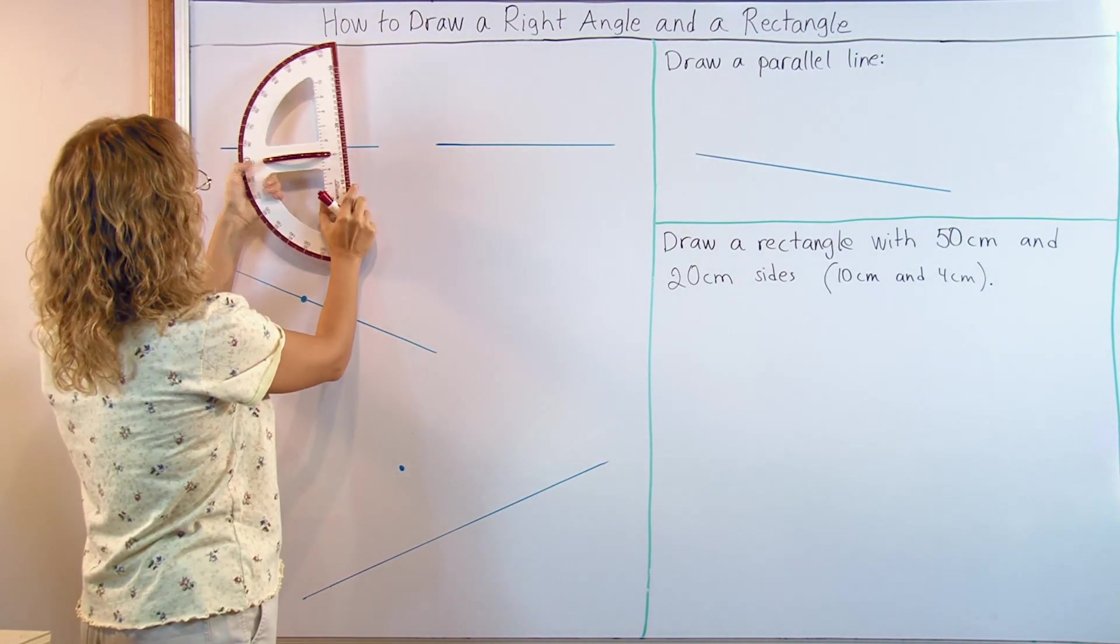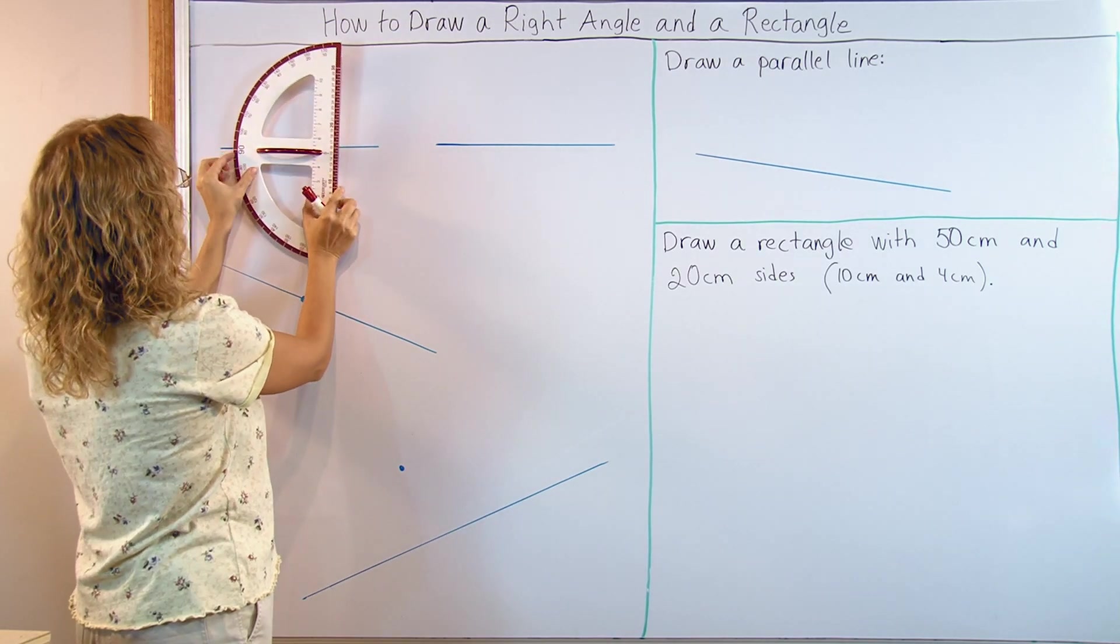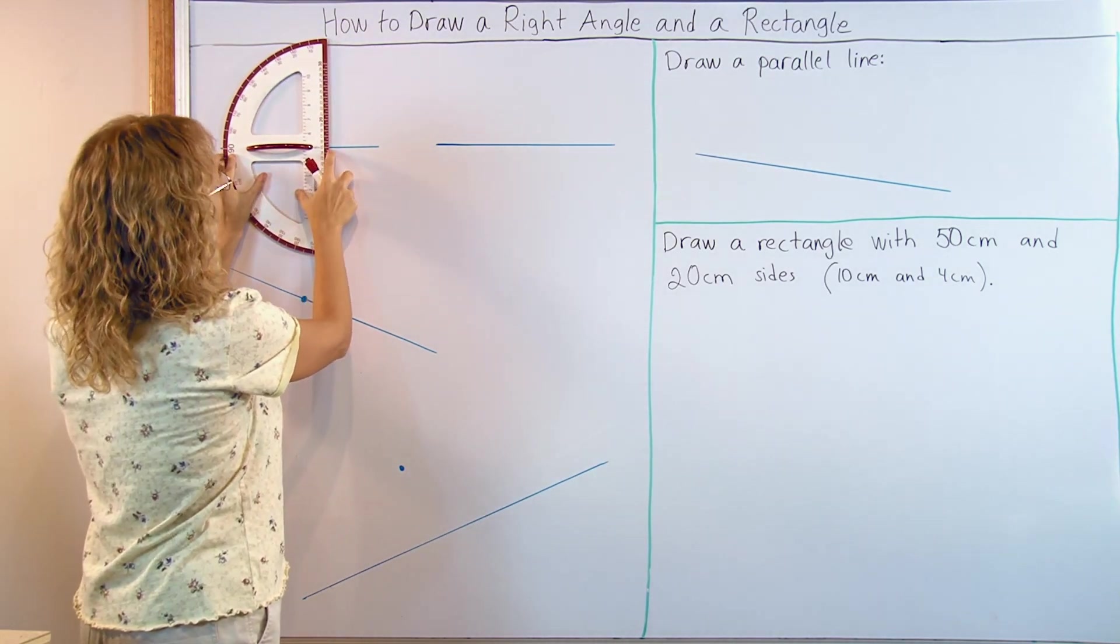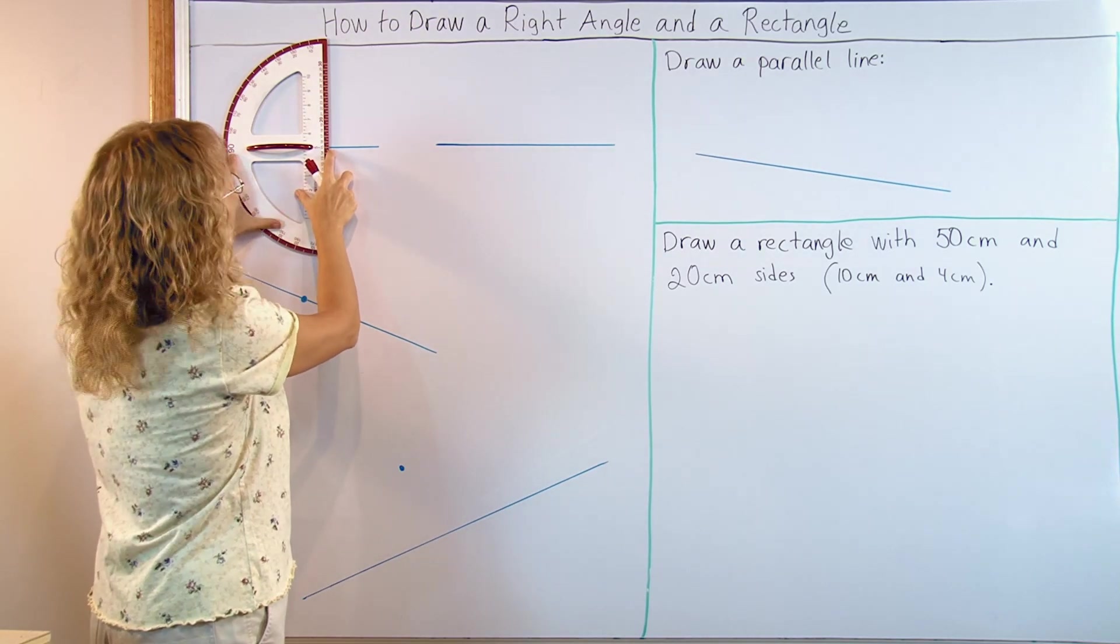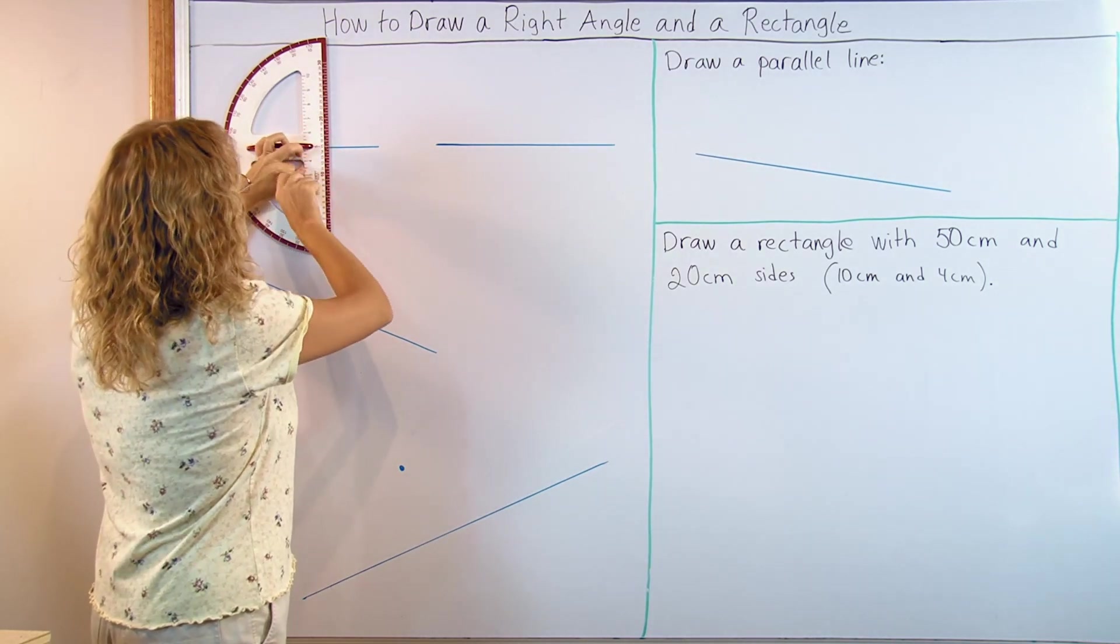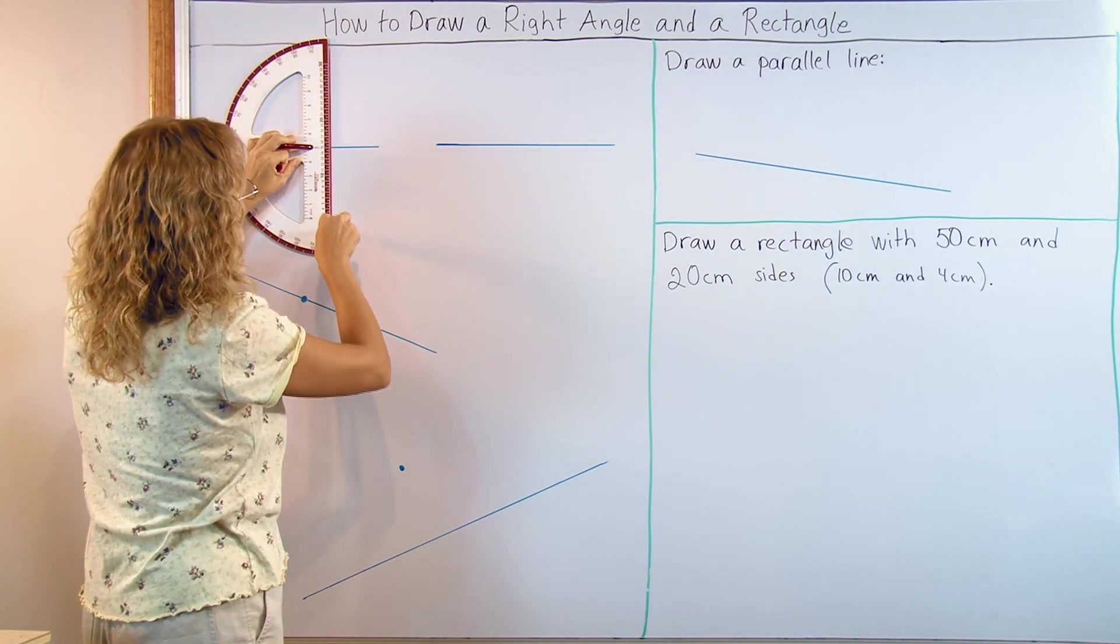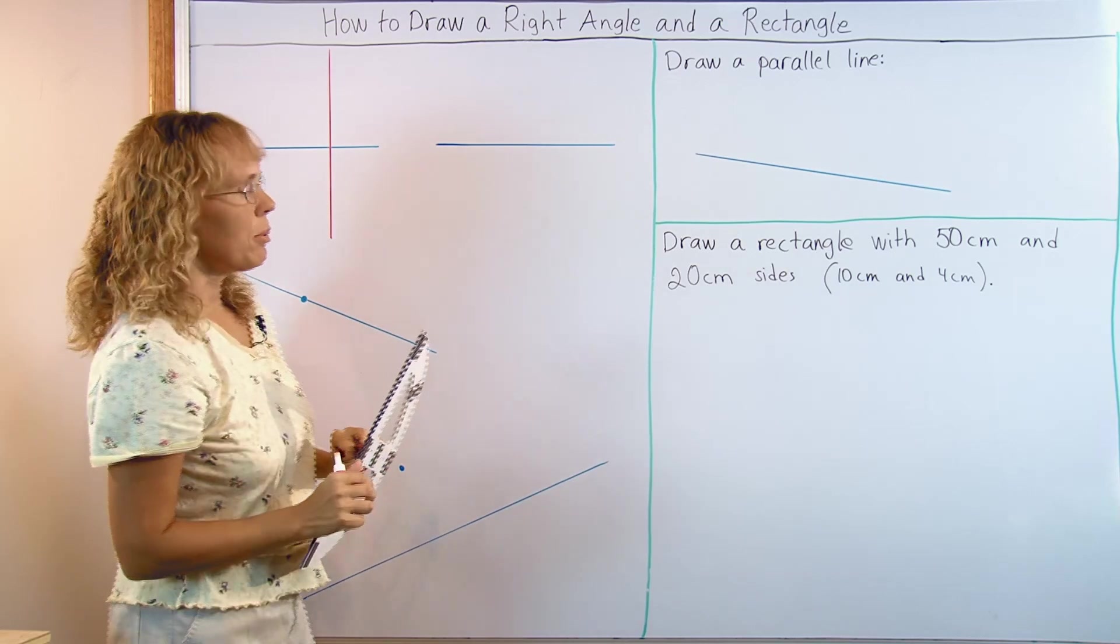Position your protractor so that your 90 degree mark here lines up with your existing line, and then the midpoint here, however it is marked, has to line up with your line too. And then you just draw. There. So it's pretty simple.